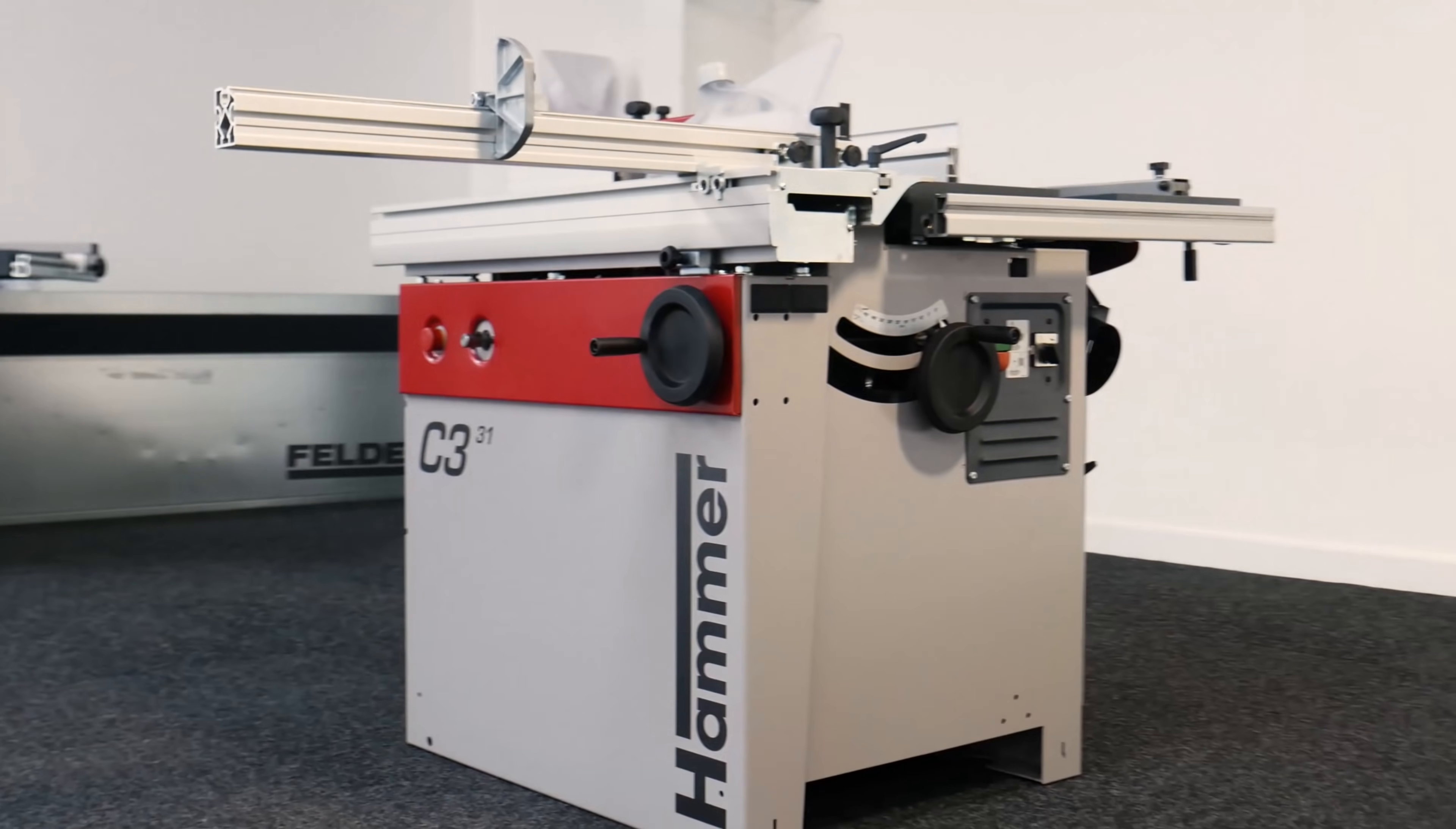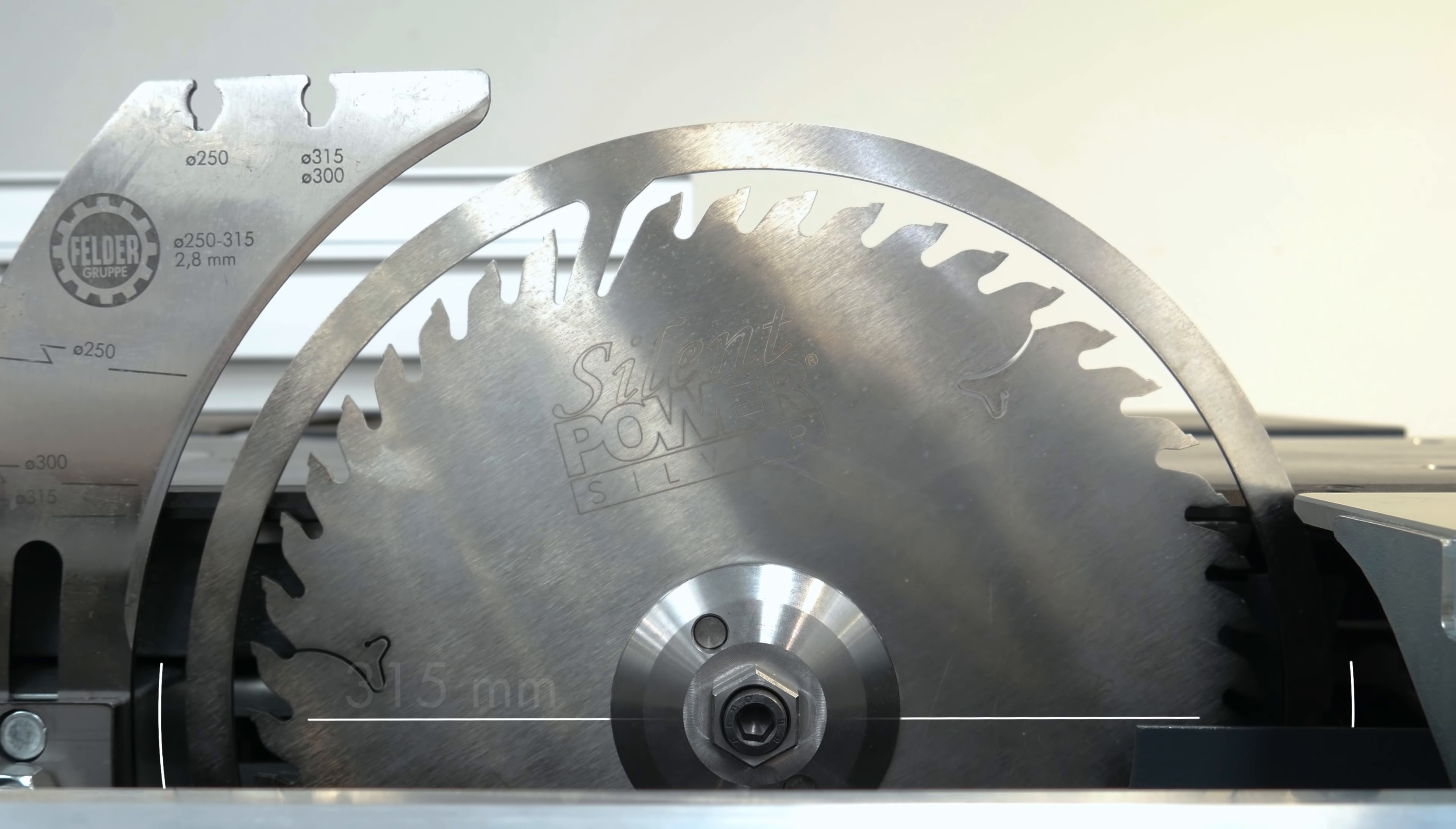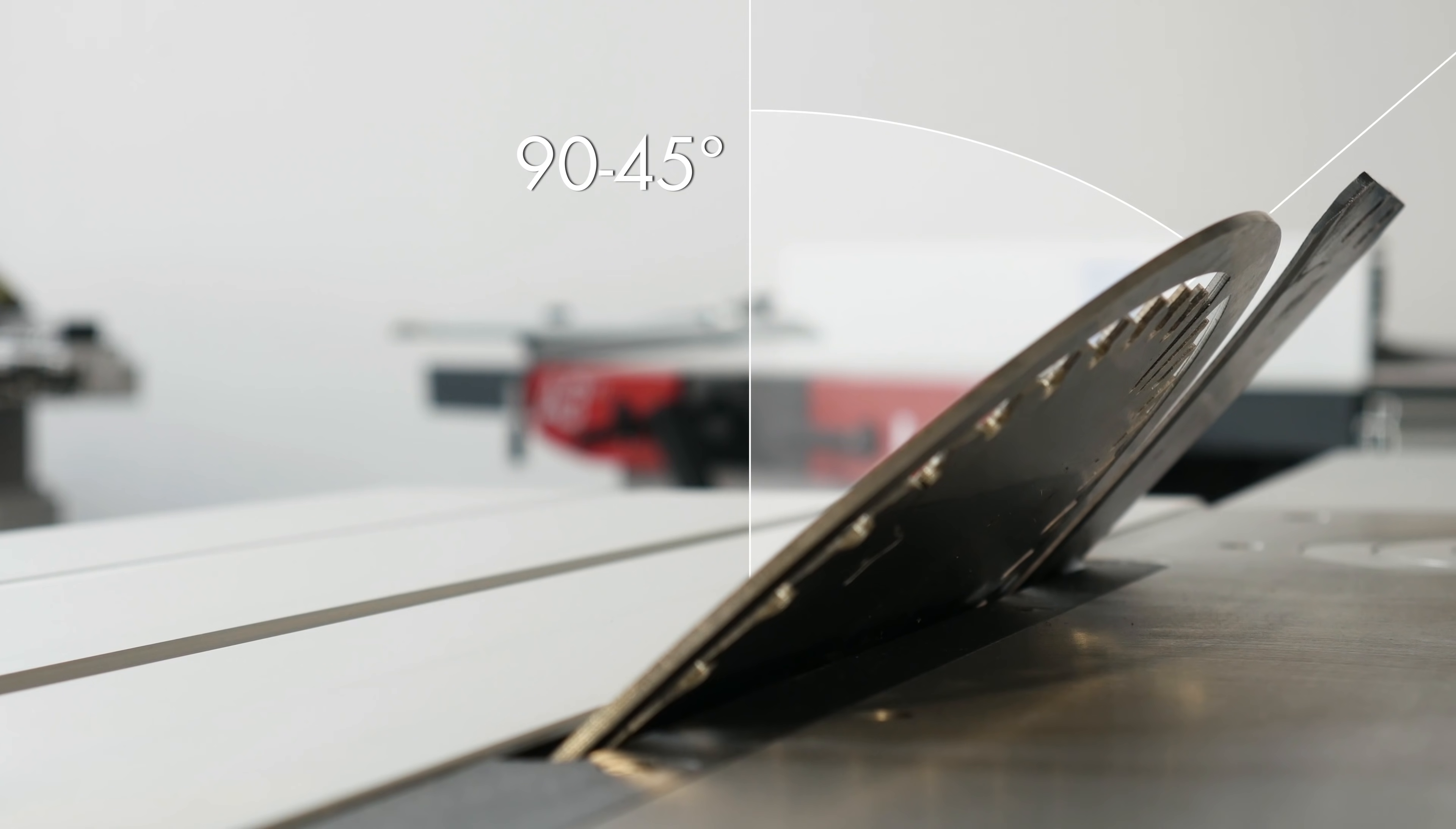At the front side of the C331 is the sliding table, spindle molder and saw unit. The main saw blade accommodates diameters between 250 and 315mm with a saw unit speed of 4800rpm. The saw blade has a maximum cutting height of 103mm and can be angled using the handwheel to any position between 90 and 45 degrees.